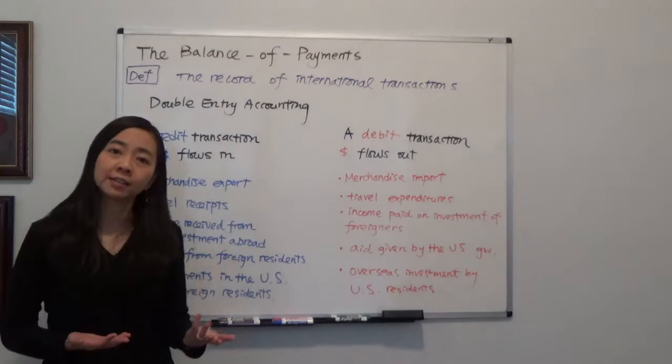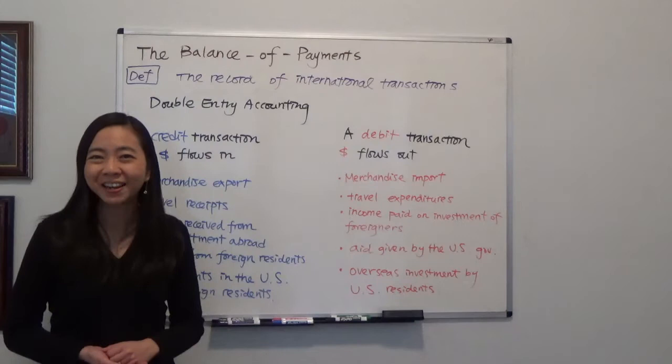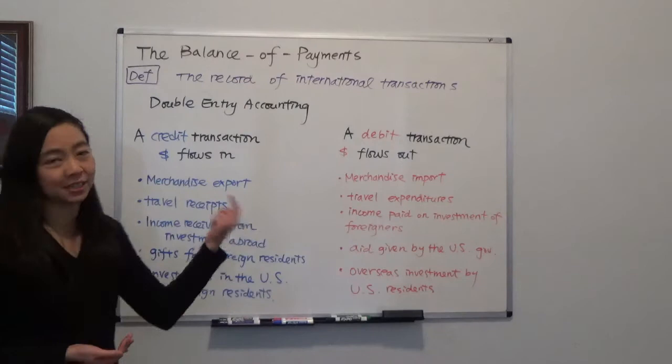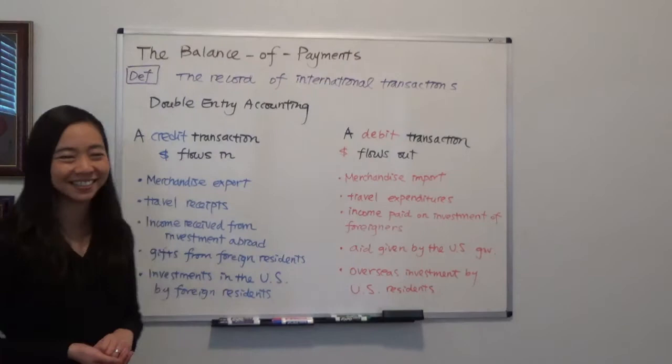The second example is travel receipts. If there is a European business person traveling via United Airlines, this business person will have to pay United Airlines for the travel service. So the money also flows in from Europe to the United States, making that a credit transaction.